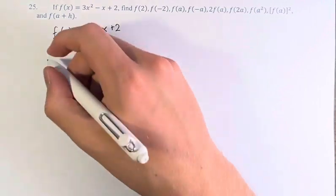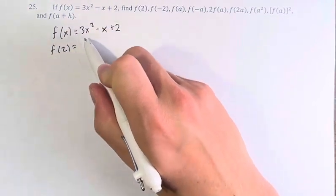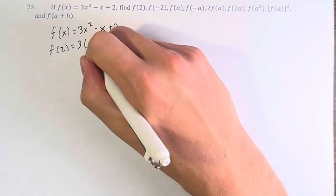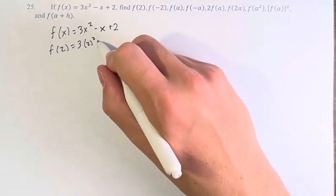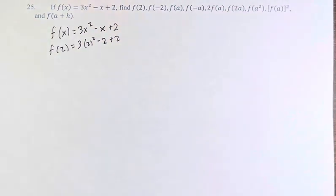So for example, our first one, f of 2, all we have to do is plug in 2 into 3x squared becomes 3, 2 squared, minus x becomes minus 2, plus 2. And now we're just going to go down the list, first of all, and do all these things before I actually calculate them.